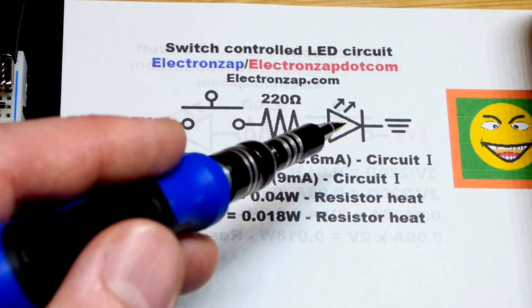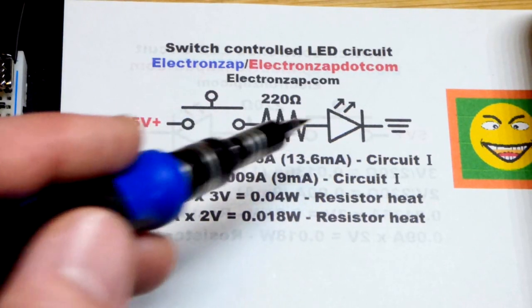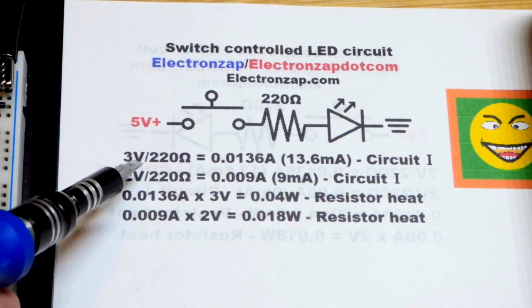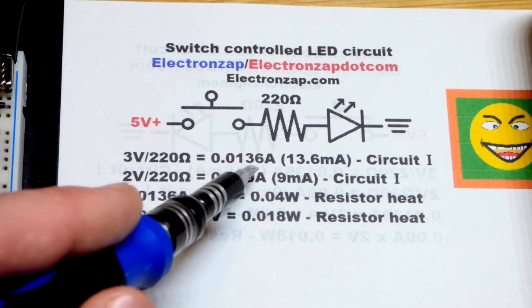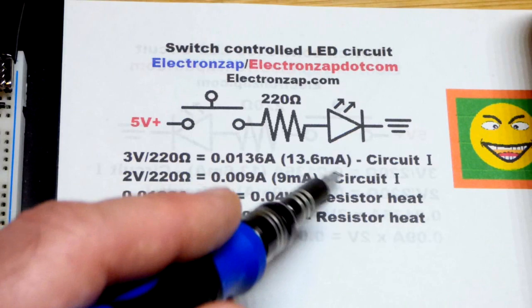We have five volts from the supply, but two volts being dropped by the LED. That's going to be three volts. So we just do that math there. Three volts divided by 220 ohms. And we'll have about 0.0136 amps or 13.6 milliamps.